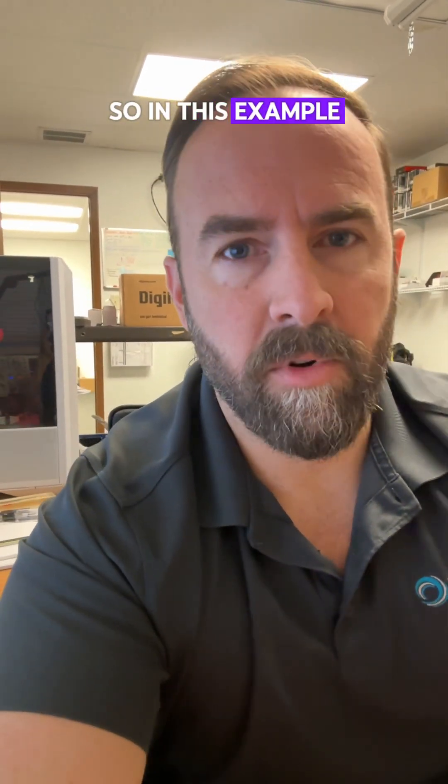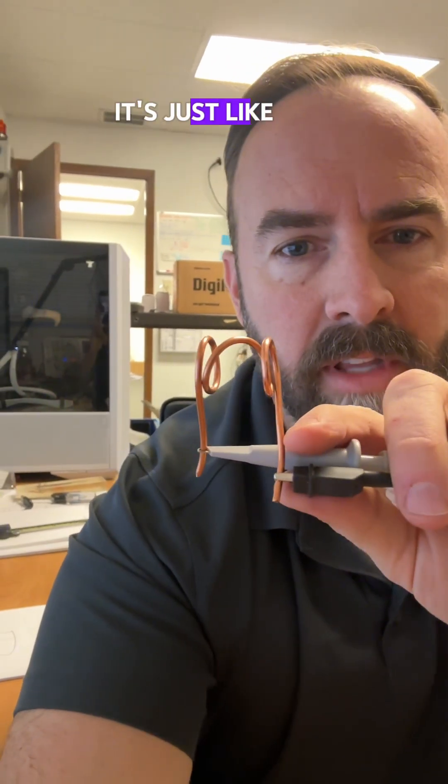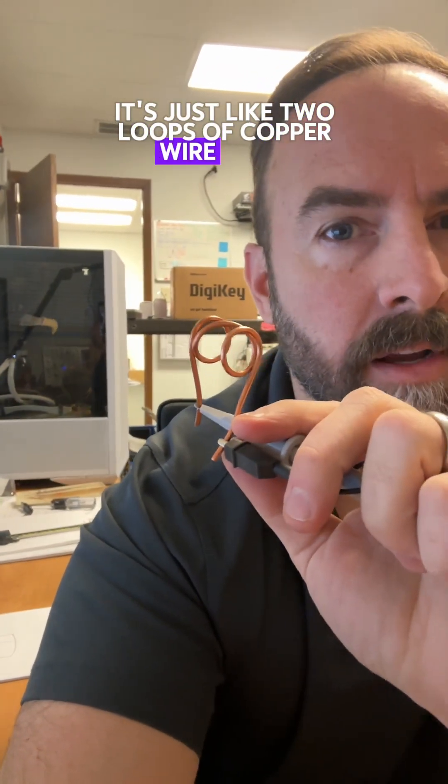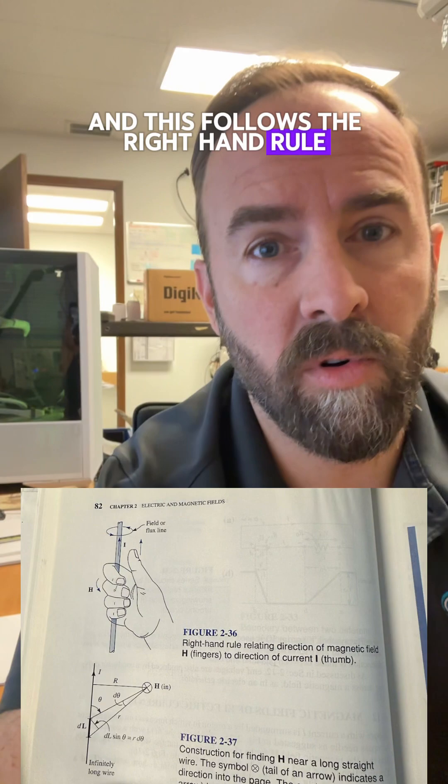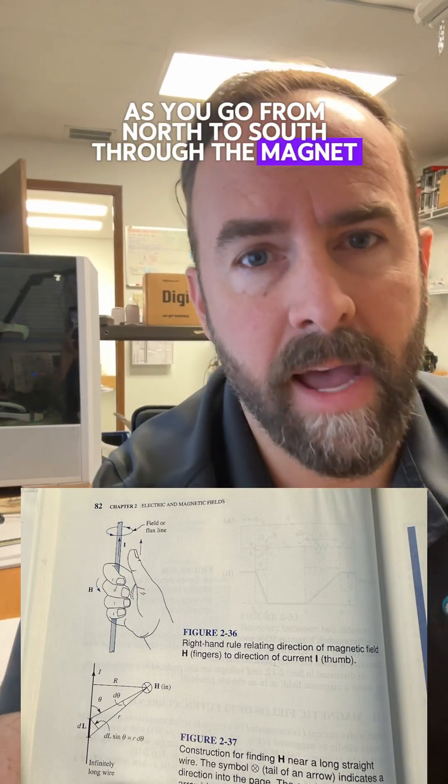So in this example here, I just have the world's simplest generator. It's just like two loops of copper wire. And this follows the right hand rule as you go from north to south through the magnet.